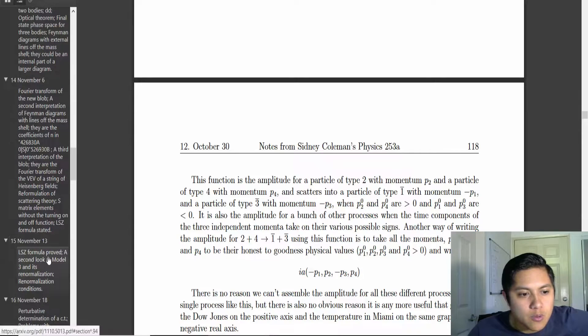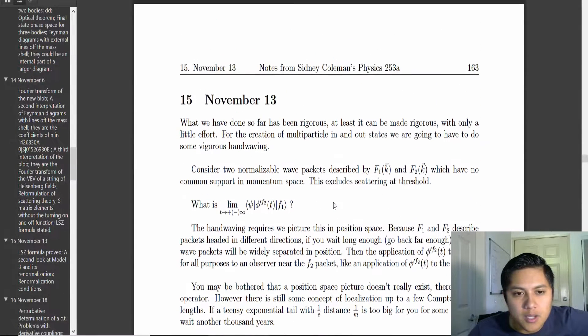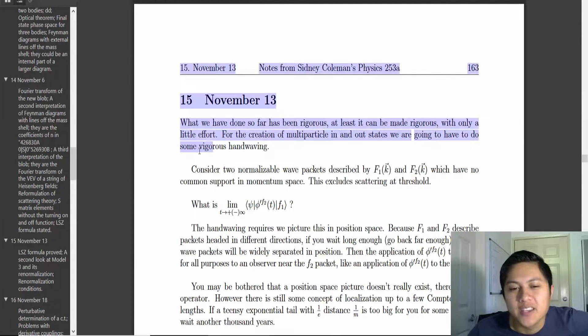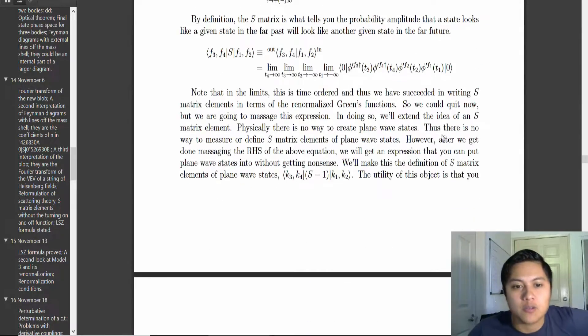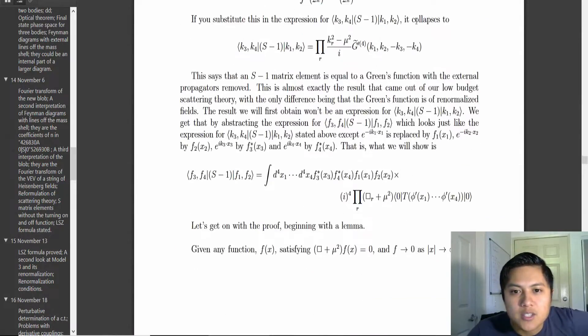Okay. So. What we got here. What we have done so far has been rigorous. At least it can be made rigorous. It's only a little effort. For the creation of multi-particle in and out of states, we're going to have to do some vigorous hand-waving. Vigorous hand-waving. Just look. Sleight of hand. Whoa. Where'd the Ace of Spades come from? I don't know. I don't know. My gosh.